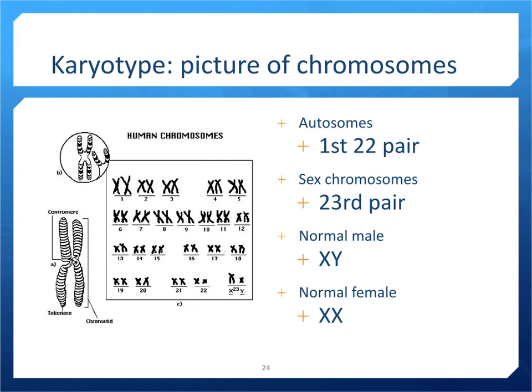A picture of all the chromosomes found in one human cell is called a karyotype. In a karyotype the 23 pairs of chromosomes are numbered, totaling 46 chromosomes. A female karyotype will show two X chromosomes, while a male karyotype will show one X chromosome and one Y chromosome.